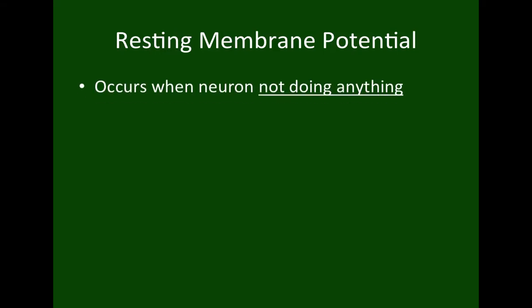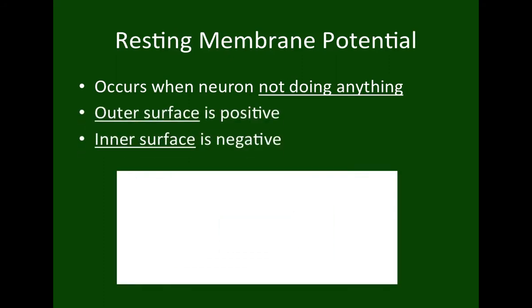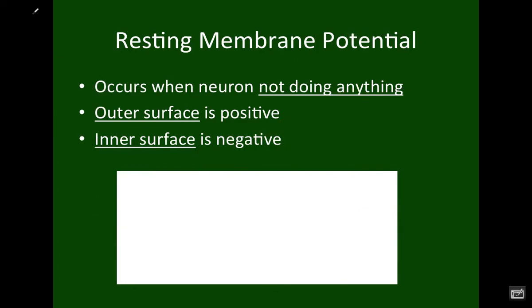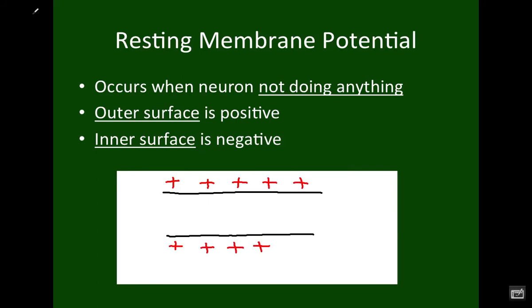Let's look a little further at this resting membrane potential, which occurs when the neuron is not doing anything — it's resting. The outer surface is positive and the inner surface is negative. Looking at the cell membrane, the charges line up right along it: positives along the outside and negatives lined up along the inside.